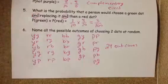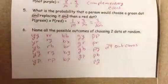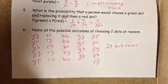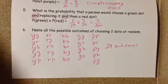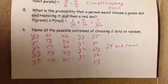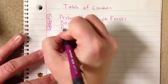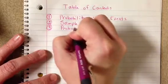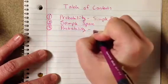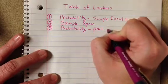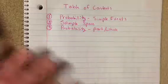This is going to be our third set of notes. On our table of contents, we're going to call this one 'Probability' and we're going to call it 'Part to Whole.' We will tape or do this in on page three.